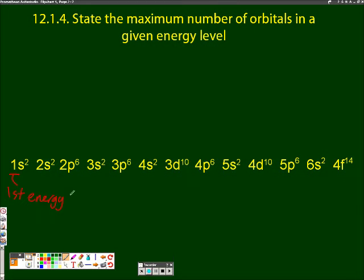The big number one shows it's the first energy level. The small two shows that there are two electrons present. And since each orbital can only hold two electrons, there must be one orbital.